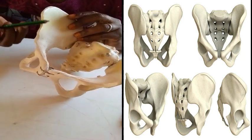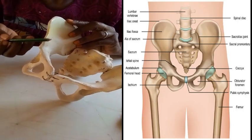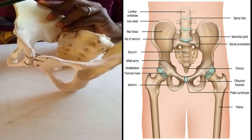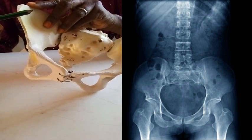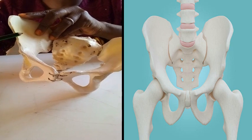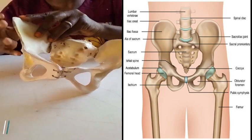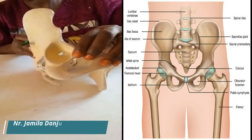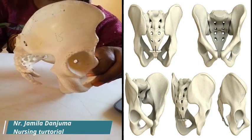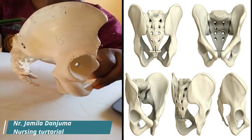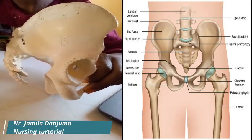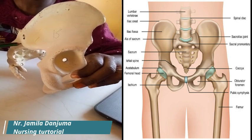Anteriorly to the ileum is a bony prominence — that is the anterior superior ileum spine — and below it is a similar projection known as the anterior inferior ileum spine. The ileum also consists of similar projections at the posterior aspect: the posterior superior iliac spine and posterior inferior iliac spine.